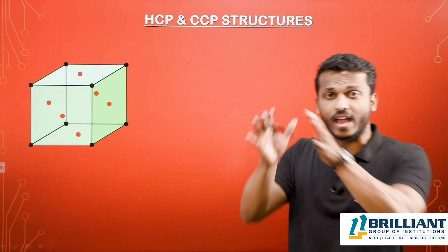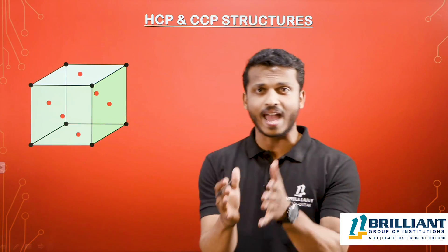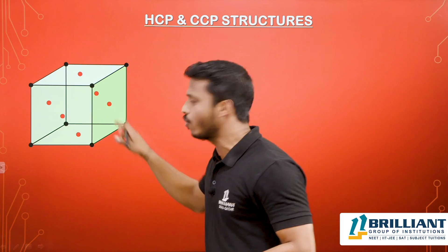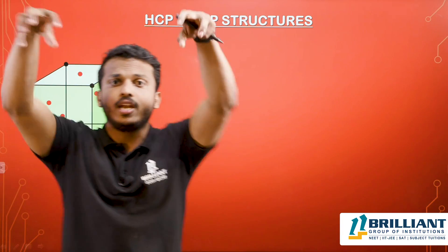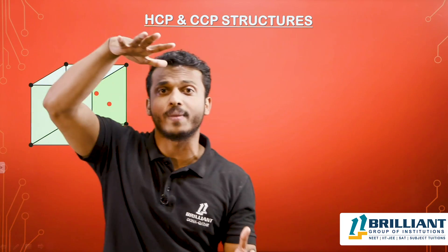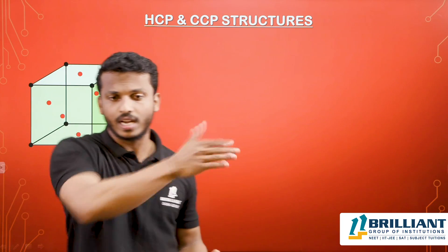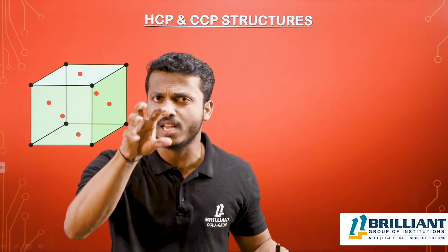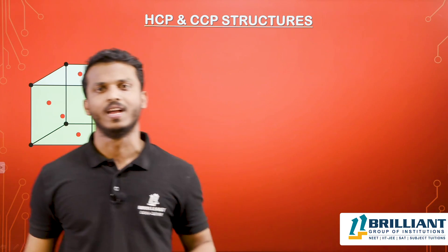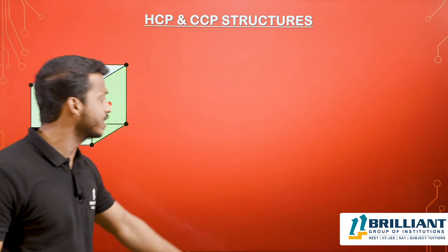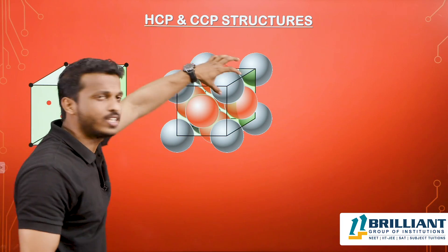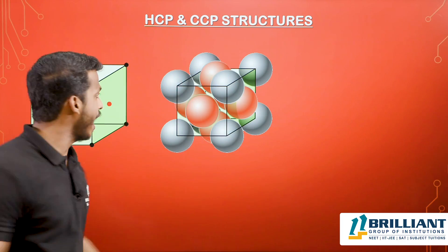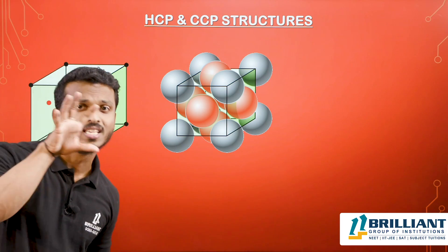In the FCC system, constituent particles are present at all eight corners, and you can see the red colored spheres located at the center of each face. The gray colored spheres are at the corners and the red colored ones are at the center of each face. Total there are eight corner spheres and six face-center spheres.